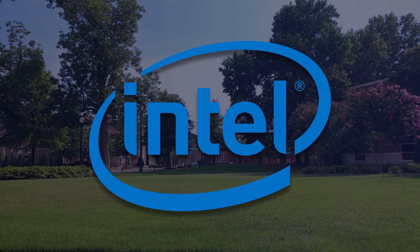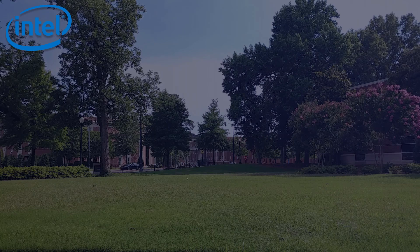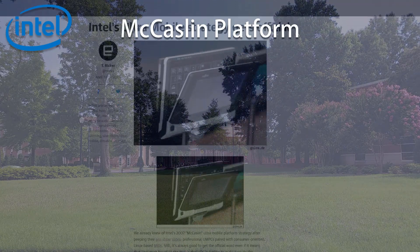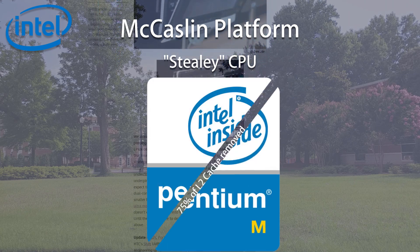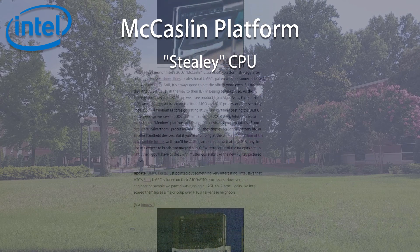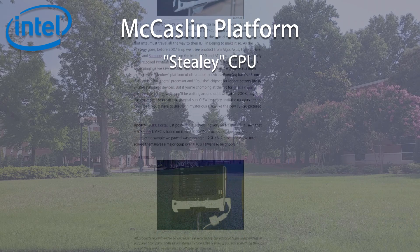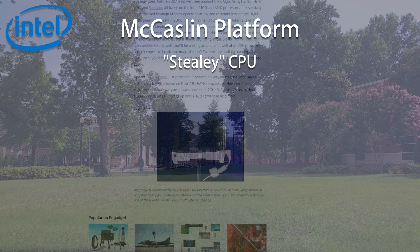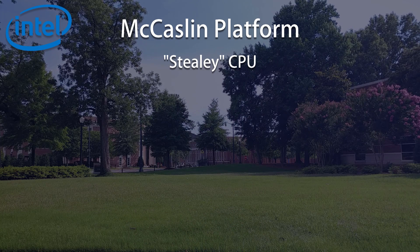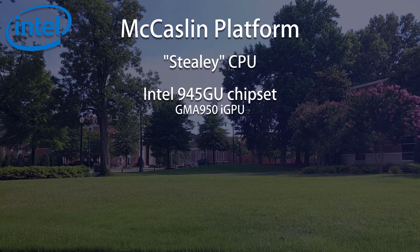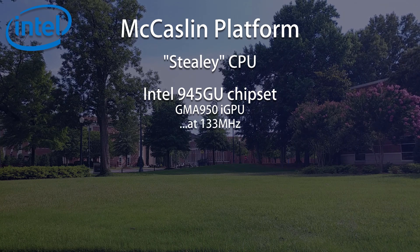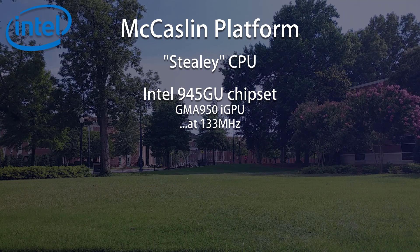Now let's talk about Intel's contribution to the UMPC market. In 2007 they released the McCaslin platform, which used the Steely family CPU — long story short, basically just a cut-down Dothan Pentium M. This is also long before the modern era of all CPUs being their own SoC, so it needs a chipset to go with it. Paired with the Steely core, we get a flavor of the 945 chipset with our old friend GMA 950 — but without the one upgrade that actually made it the 950. In fact, it's clocked even slower than the GMA 900 I tested previously.